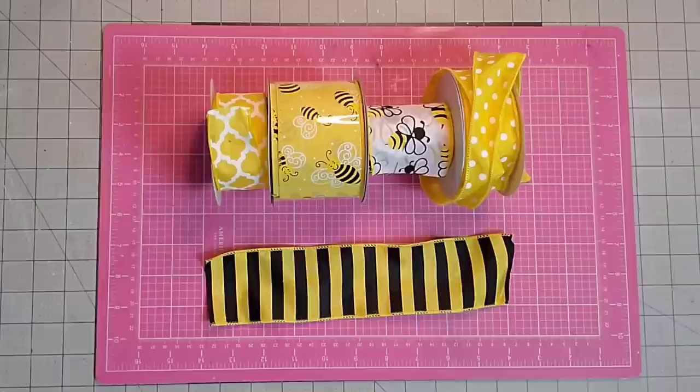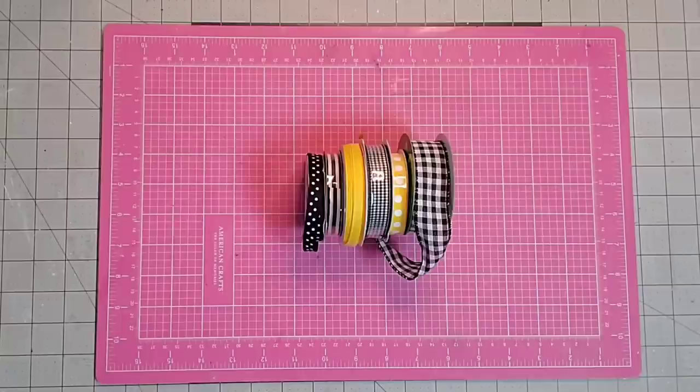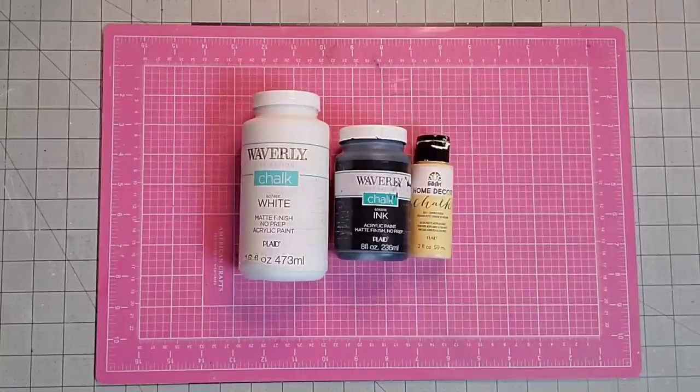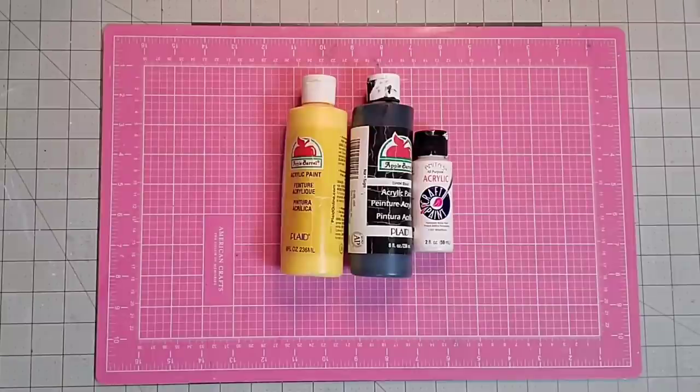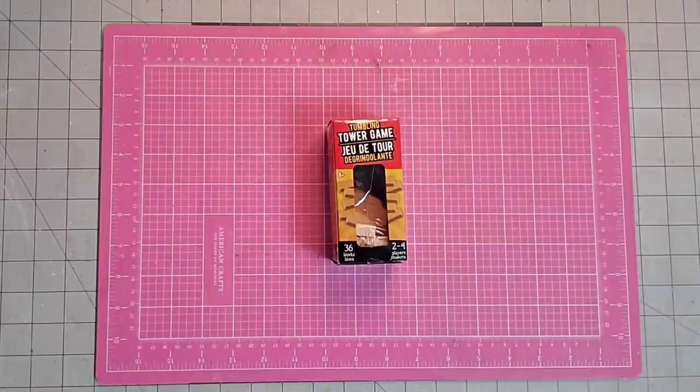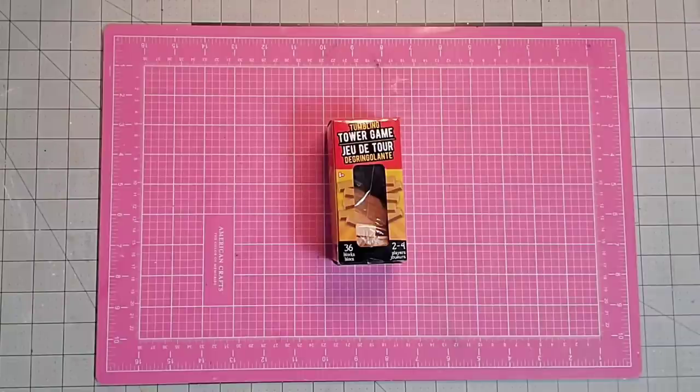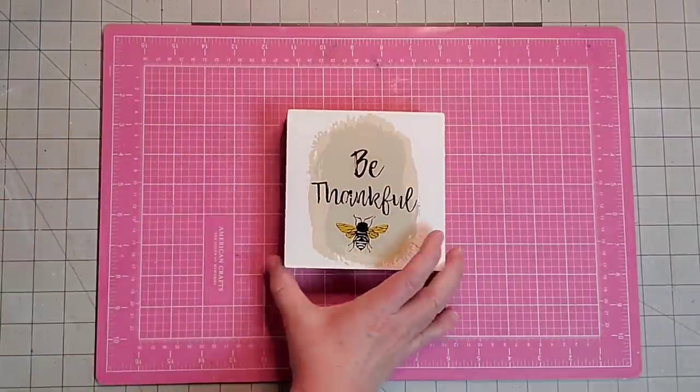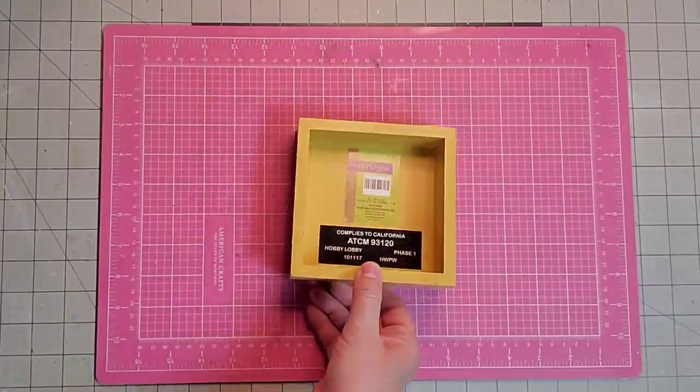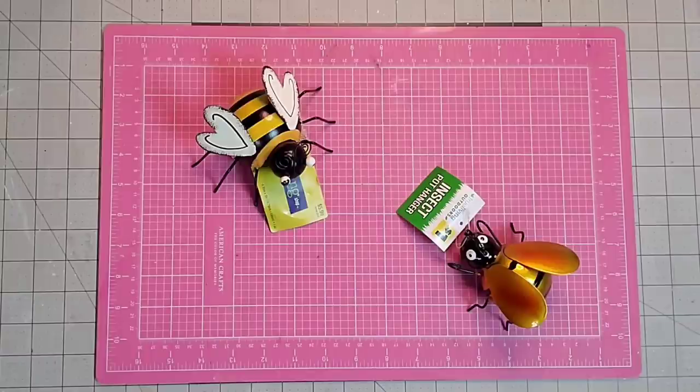Some poster letters from the Dollar Tree, word stickers from Hobby Lobby, bright yellow ball mums from Walmart, letter stickers, bee stickers from Hobby Lobby and Creative Memories, wired ribbon, regular ribbons in various widths, black, white, and yellow chalk paint, black, yellow, and white acrylic paint, Mod Podge, tumbling tower blocks from the Dollar Tree to prop things up higher on my tray, a sign from Hobby Lobby, and two metal bees from Dollar General and Hobby Lobby.